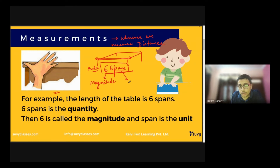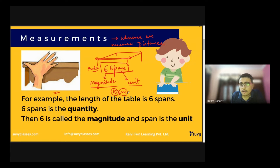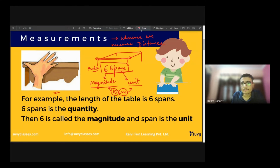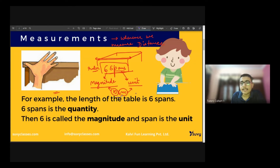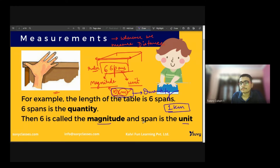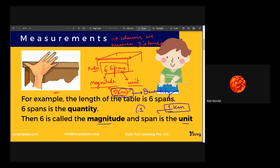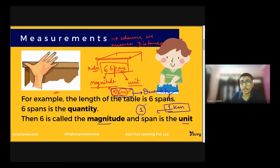Now very importantly: for example when you are measuring and it took you six spans to cover the entire table, we call six as the magnitude and spans as the unit. For example, if I say 10 centimeters, then 10 is the magnitude and centimeter is the unit. A quantity has both magnitude and unit.